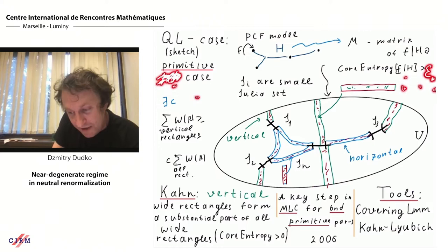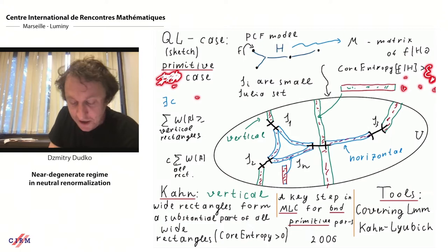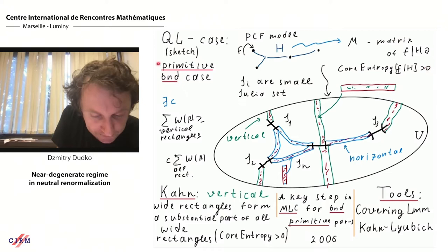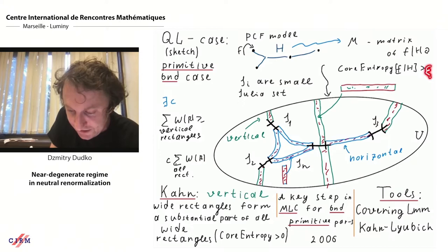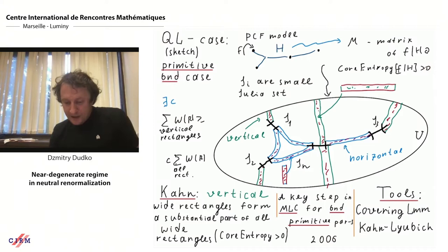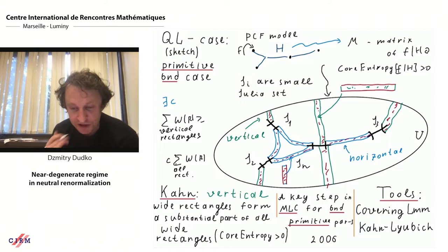Roughly speaking, Misha and Jeremy translated all the theory of primitive renormalization into the language of the near-degenerate regime and established a priori bounds under such conditions. More details will appear tomorrow in Misha's talk.